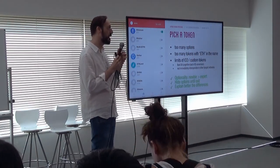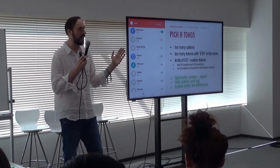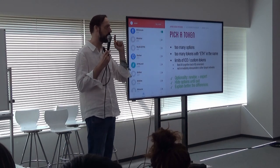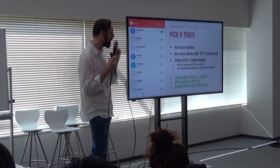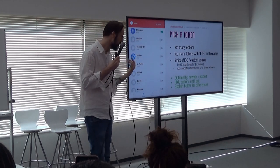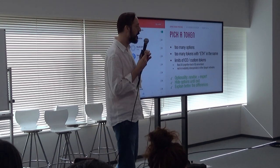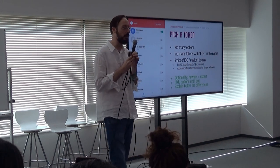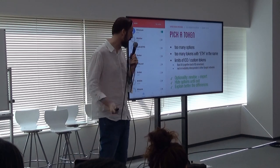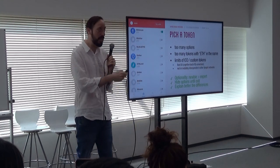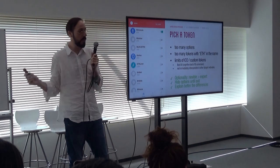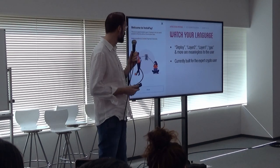So the pattern here is to gate optionality. For non-users — simplified — just give one option. Maybe DAI or whatever. And for expert users, yes, you can expand and choose your own — always be there. And hide options until exit — maybe you decide when you exit what token you want. And explain better the difference. This was one of the solutions from the previous framework that works.